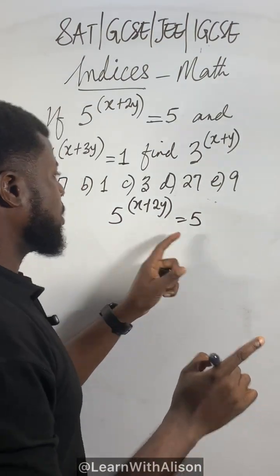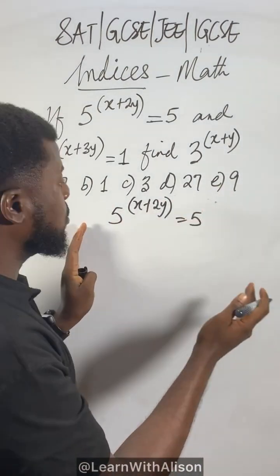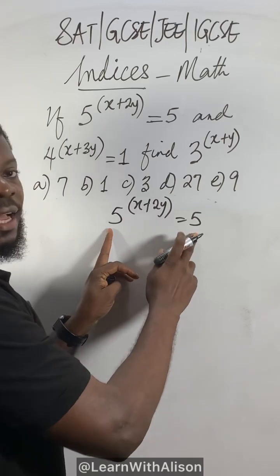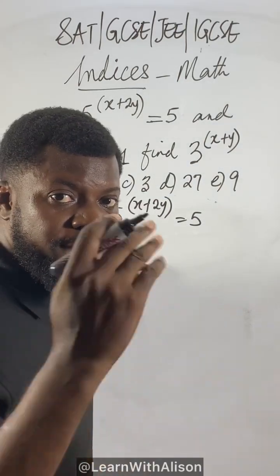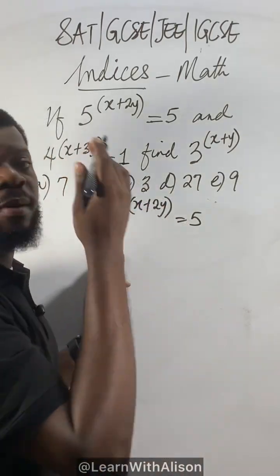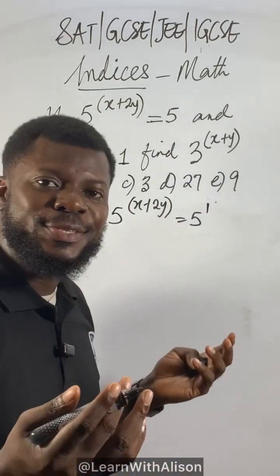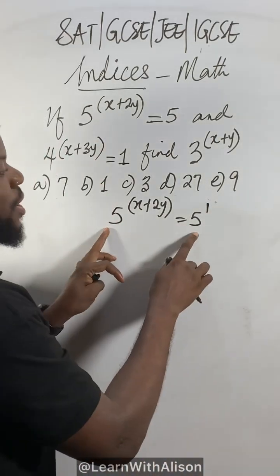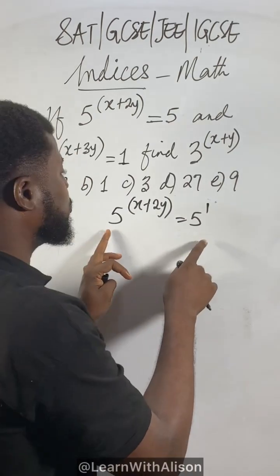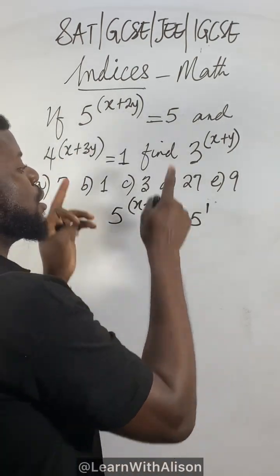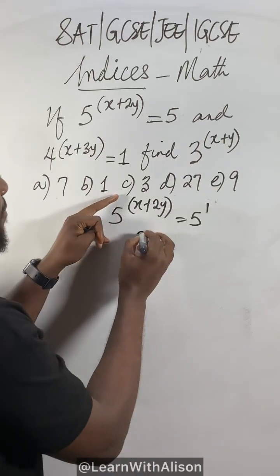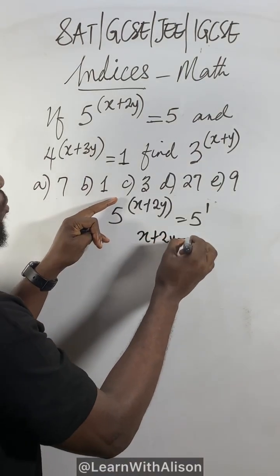Notice that this is an equal sign separating two quantities and you notice that the base here, we're having common base 5. 5 here doesn't have the power but it has the power; the power is 1. So what do we need to do? It's simple. Whenever you notice that we have common base when you're equating two quantities and they have common base, equate the power. Ignore the base, equate the power. So you have x plus 2y equal to 1.